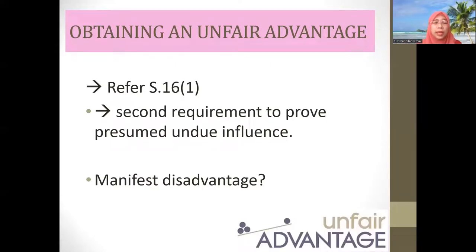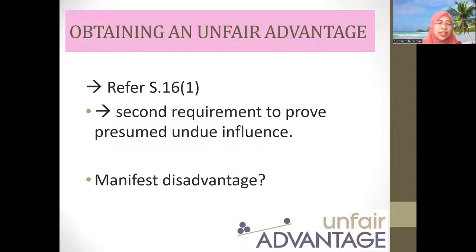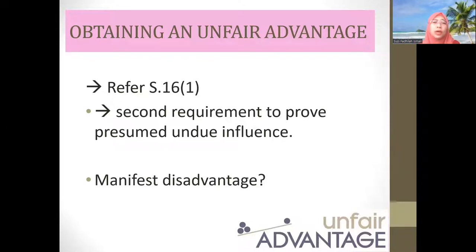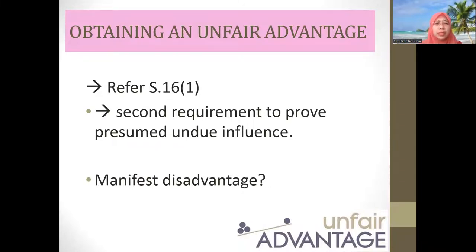Assalamualaikum warahmatullahi wabarakatuh. Today we are going to continue with a discussion on the topic of undue influence, specifically the elements of presumed undue influence. In the previous lecture, we completed the discussion for the first element, which concerned proving that the person who asserted undue influence is in a position to dominate the will of the other — the element of domination or dominant position. This is contained in Section 16 subsection 2 of the Contracts Act.